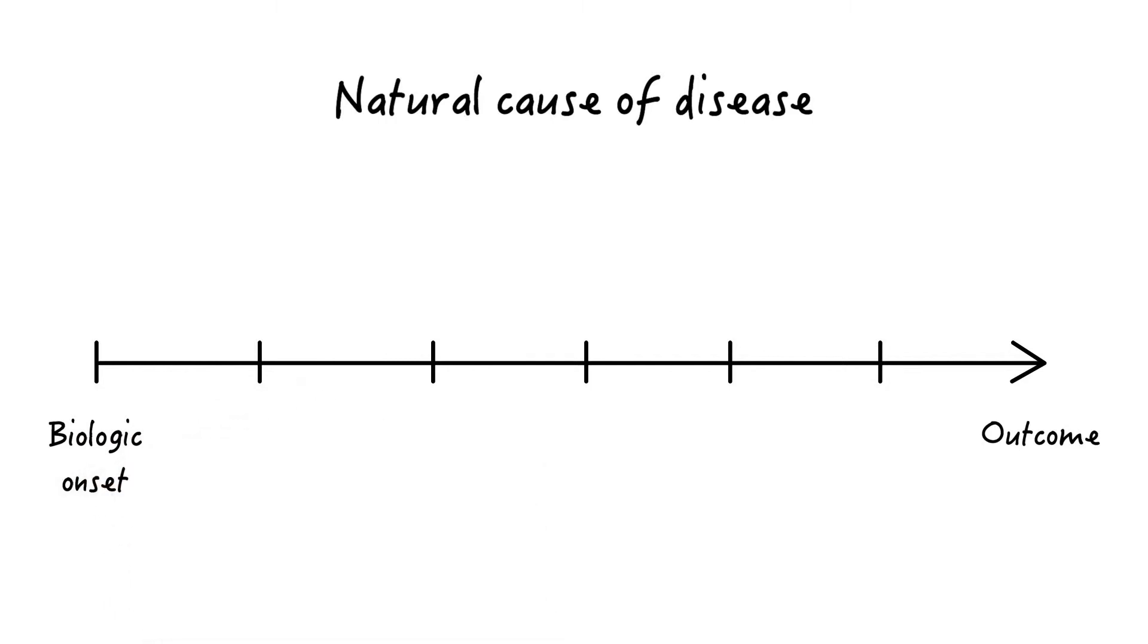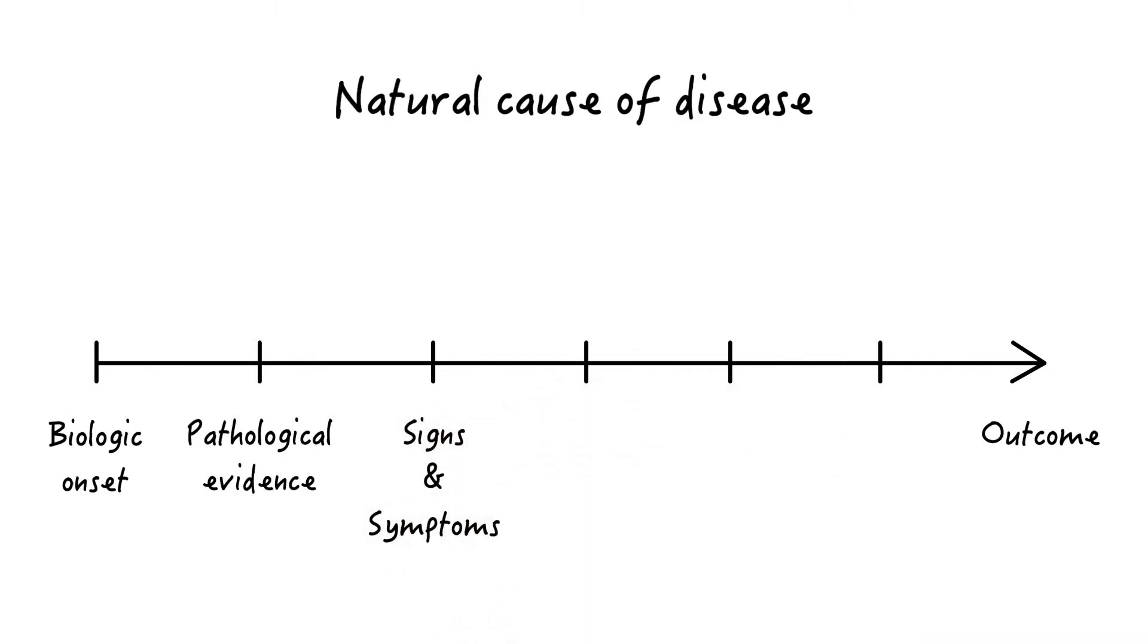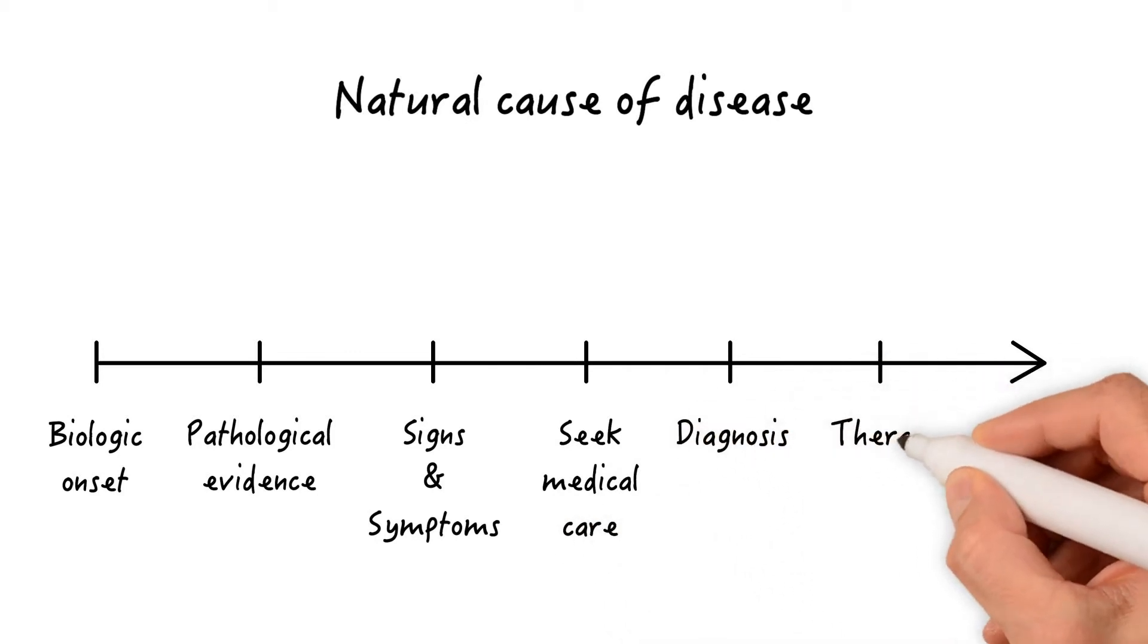Biologic onset is when something goes wrong on the cellular level. That's when the disease starts. Then, there's a point at which pathological evidence could be found if it was sought. Then, usually signs and symptoms develop, which get the patient to seek medical care, after which the diagnosis is usually established and therapy is initiated.